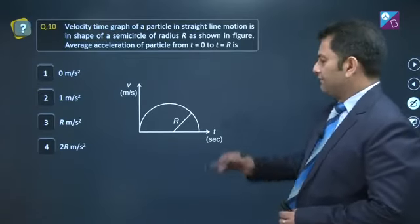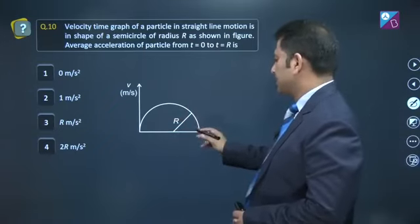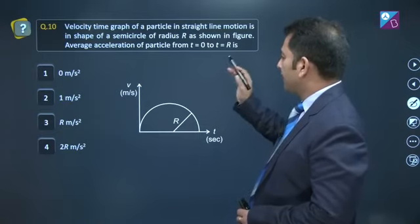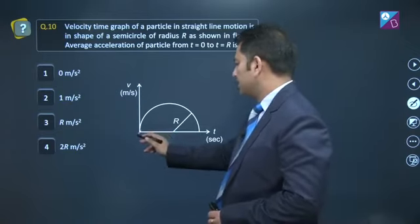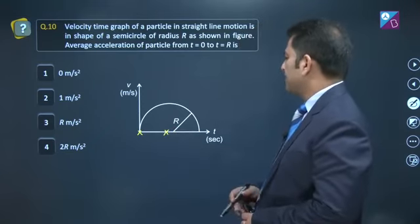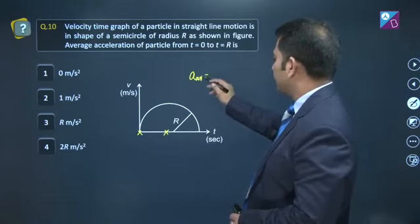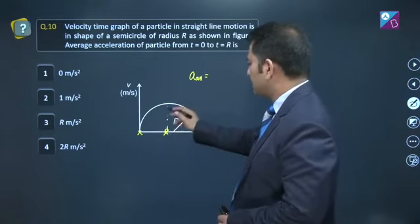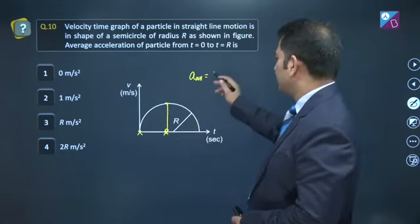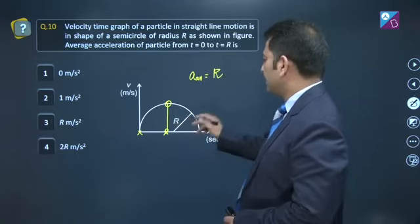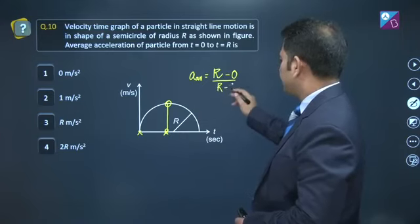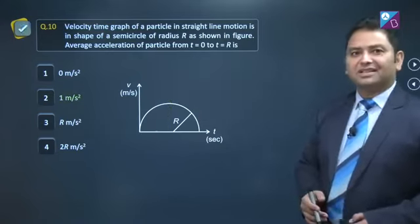Question number 10. A velocity time graph is given in the form of semicircle, and this semicircle has radius r. We need to calculate average acceleration from 0 to r, meaning from this time to this time. By the way, what is the formula for average acceleration? Final velocity corresponding to this time - this is a semicircle, so this value will also equal r. So final velocity is r, initial velocity is 0, final time is r minus 0. See, this is straightforward - 1 meter per second square.